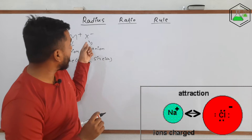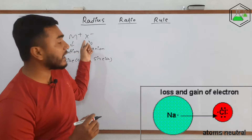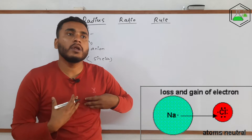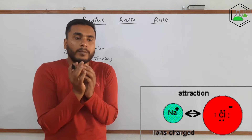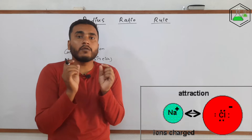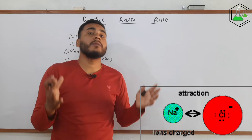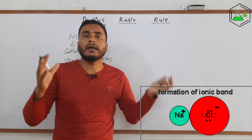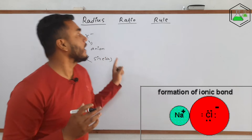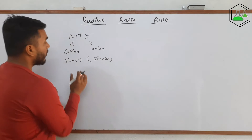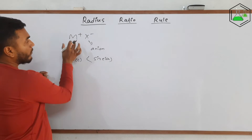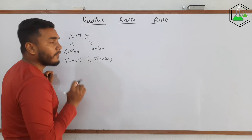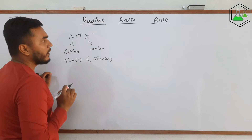But to form an anion, X has to gain one electron. When it gains one electron, there will be a strong force of repulsion between the electron cloud, and as a result, the size of the anion increases. So you can see that the size of the cation is always less than the size of the anion.